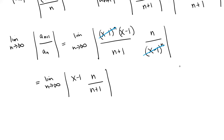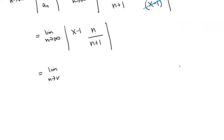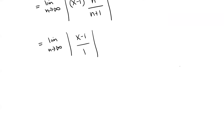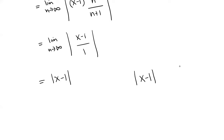When we evaluate this limit, we see it has the form infinity over infinity, so we need to use L'Hôpital's rule. We take the derivative of the top and the derivative of the bottom with respect to n. The derivative of n is 1 and the derivative of n plus 1 is also 1. So we have the limit as n goes to infinity of the absolute value of (x minus 1) over 1, which is just equal to the absolute value of x minus 1. Now we want to set this less than 1 so that the series will converge, since we're trying to find all x values that make this Taylor series converge.